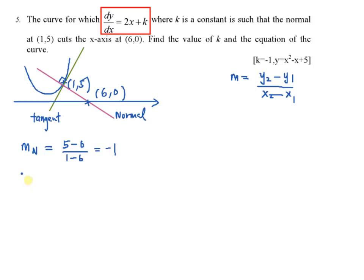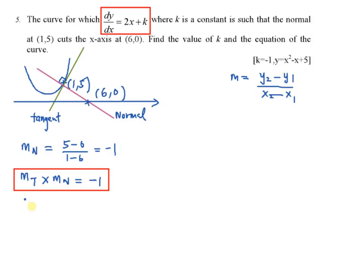You understand that the gradient for the tangent multiplied by the gradient for the normal equals negative 1. Why? Because the tangent and normal are perpendicular, therefore the product of their gradients equals negative 1. So you can find the gradient for the tangent: negative 1 divided by the gradient for normal, that is negative 1 divided by negative 1, which equals 1. Why do I want to find the gradient for the tangent? Because the gradient of the tangent is actually your dy/dx.